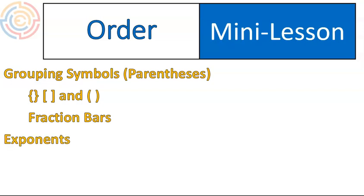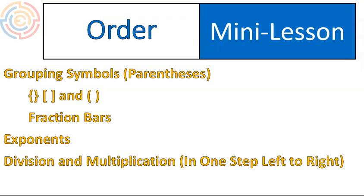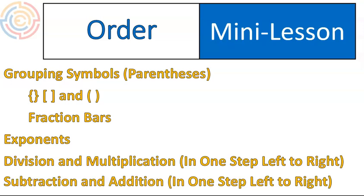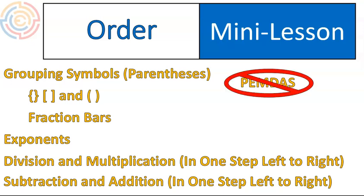The second step is exponents. Then you do your division and multiplication in one step from left to right. Then you do your subtraction and addition in one step from left to right. In the past, you may have heard the phrase PEMDAS, or 'please excuse my dear Aunt Sally.' I want to encourage you to never think about it that way again. If you are going to list those letters, list them separated like this: P for parentheses or grouping symbols, then E for exponents, then multiplication and division together, then addition and subtraction together.